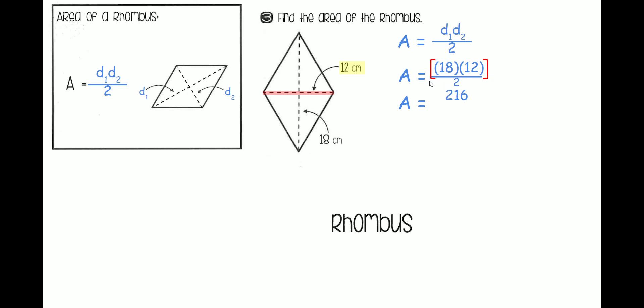So that's 216. We still need to divide it by 2. And once we do that, we end up with 108 centimeters squared. And that is how you find the area of a rhombus, a trapezoid, and a parallelogram.